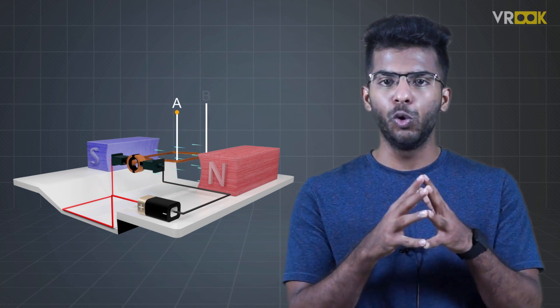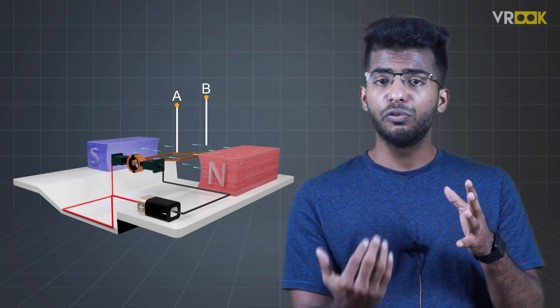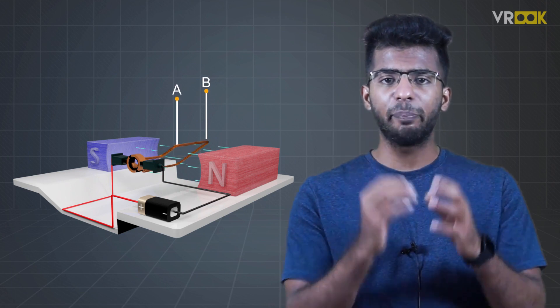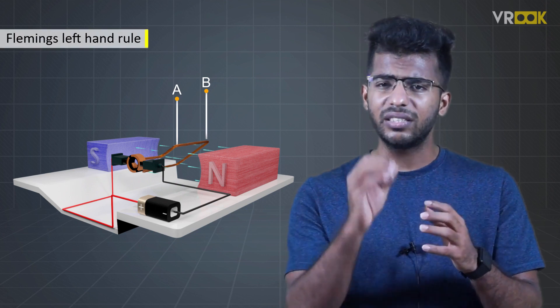The conductor AB of the loop is now in the zero degree position. It will experience the force upwards. To validate this fact, we have another simple rule. It is called Fleming's left hand rule. Let us recall this rule.